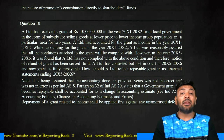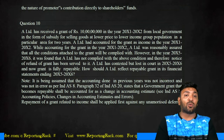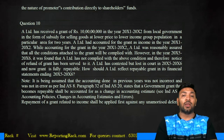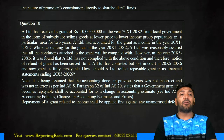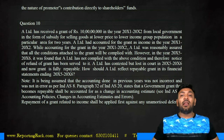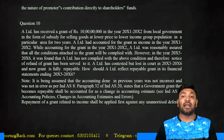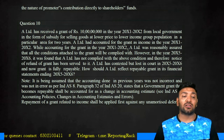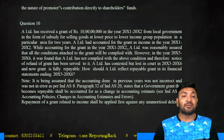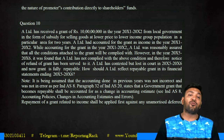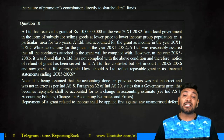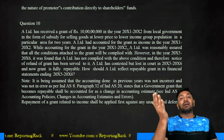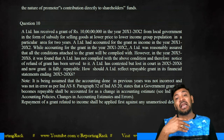A Limited received a grant of 10 lakhs from the local government in 2011-12 as a subsidy for selling goods at a lower price to a lower-income-group population in a particular area for two years. A Limited accounted for the grant as income in 2011-12, being reasonably assured that all conditions would be complied with. However, in 2015-16 A Limited found they did not comply with the conditions, so a notice of refund was served. A Limited contested but lost, so the grant is repayable. Earlier the credit was to P&L — now since there is a refund, A Limited will debit the P&L.